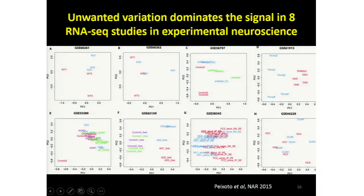Here are eight panels of PC1 versus PC2, to show you there's lots of unwanted variation in this particular case. These are experiments involving mouse brains. If we took the top left one, you'll see wild type versus knockout, and in a good world you'd think the difference between wild type and knockout is important — so you'd like that distinction on the first principal component. But looking at that top left, the wild type/knockout distinction is not very clear in either the first or second principal component. They're kind of mixed up.